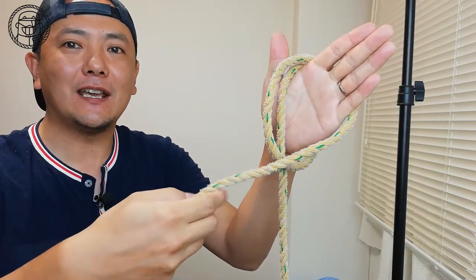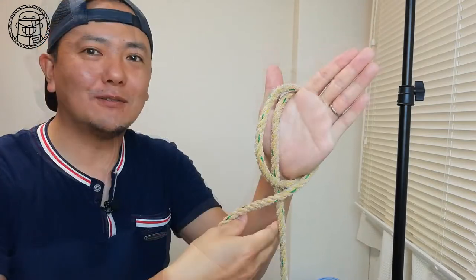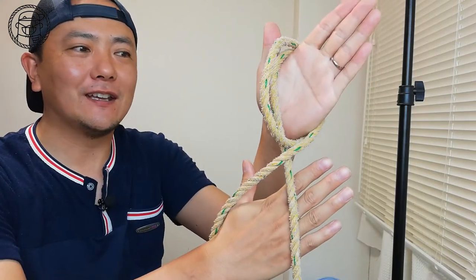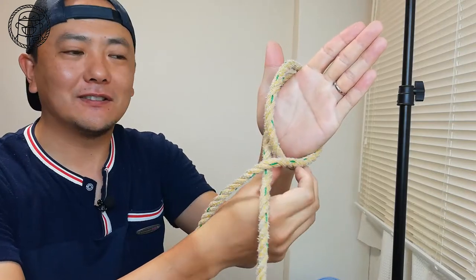Close the ropes. Put your hand in the back of the crossed rope. Get the rope as it is.